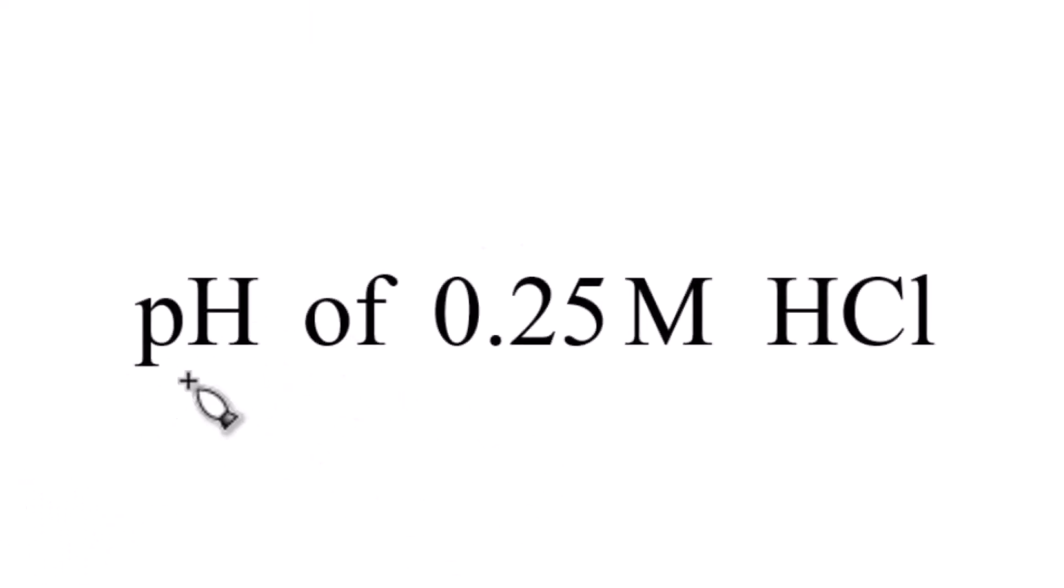All right, if you need to figure out the pH of this 0.25 molar solution of HCl, hydrochloric acid, here's how we do it.